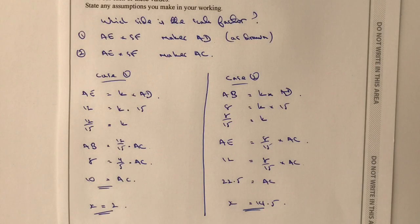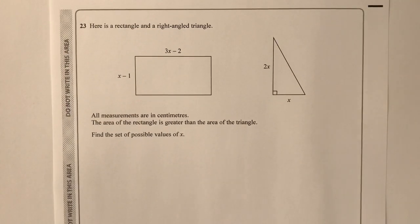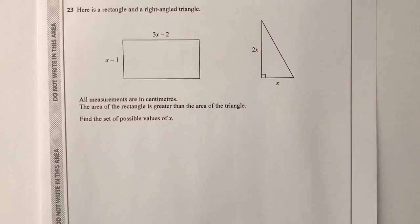So let's move on then to question number 23. This is a much, much more straightforward question, I think, and hopefully that will then complete our working through this whole paper. So question number 23. Here is a rectangle, a right angle, all the measurements are in centimetres. Find the set of possible values of X if the area of the rectangle is greater than the area of the triangle.